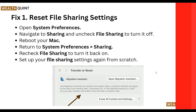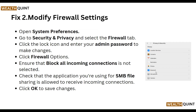Our second step is to modify firewall settings. Open System Preferences and go to Security and Privacy. Select the Firewall tab, click the lock icon, and enter your admin password to make changes. Click Firewall Options and ensure that 'Block all incoming connections' is not selected. Check that the application you are using for SMB file sharing is allowed to receive incoming connections, then click OK to save changes.